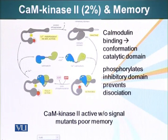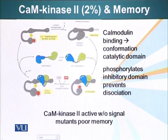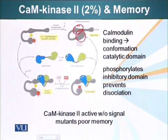One of the targets for calmodulin is CAM kinase 2. It is an enzyme present in specific neurons and specific parts of the brain — about 2% in certain brain regions. CAM kinase 2 has two important domains: an inhibitory domain and a catalytic domain. When this protein is inactive, the inhibitory domain is bound to the catalytic domain and prevents it from functioning. The catalytic domain, as the name suggests, attaches a phosphate group to target proteins.